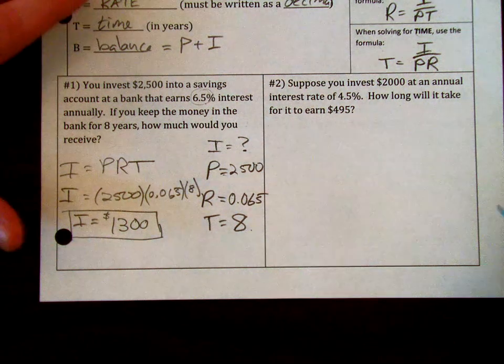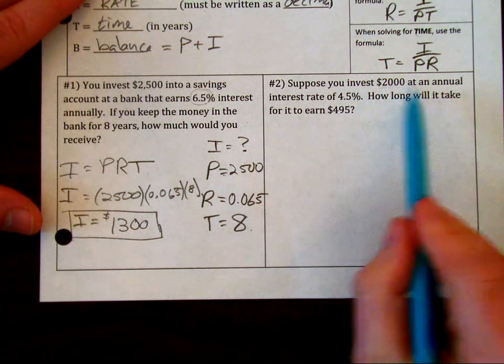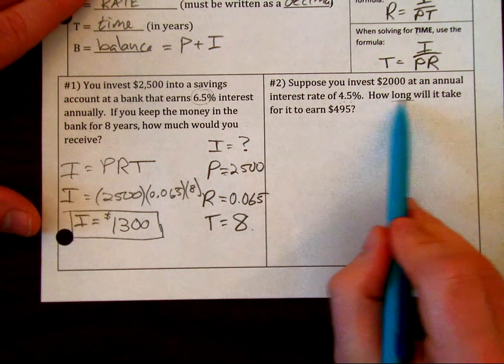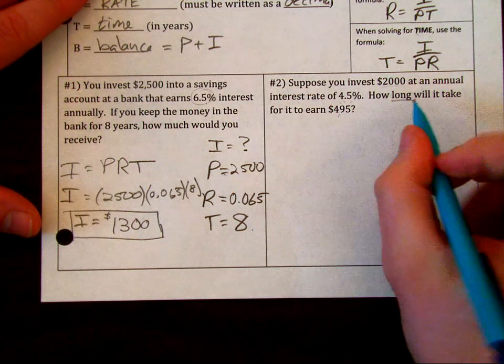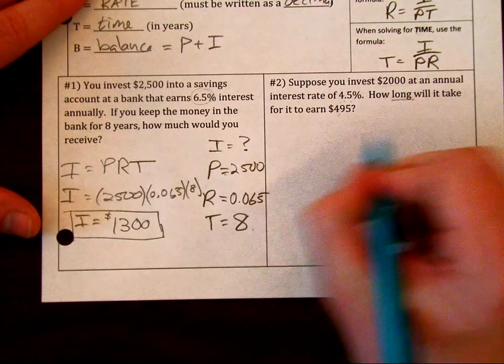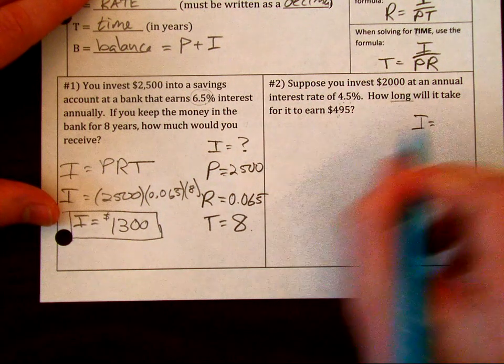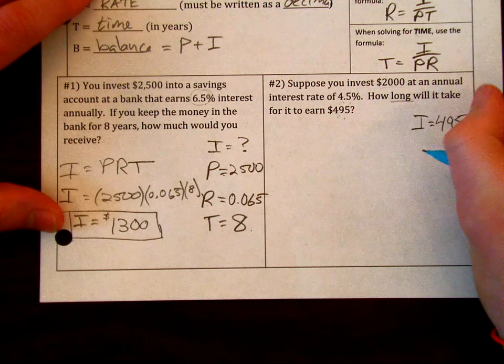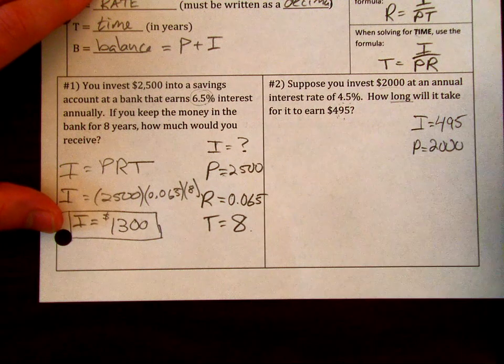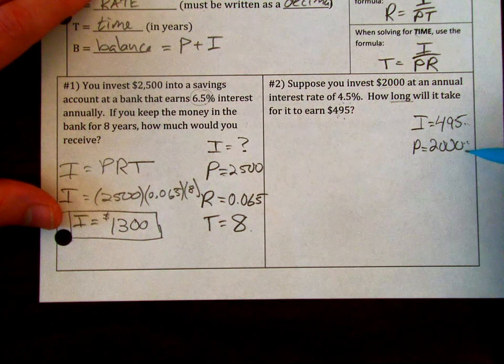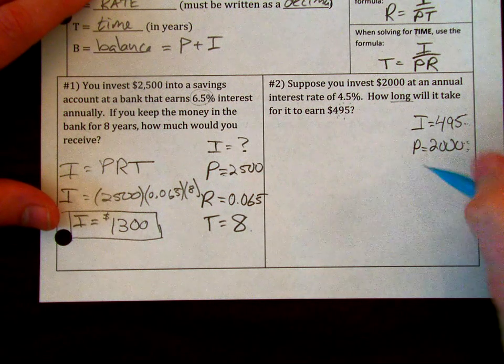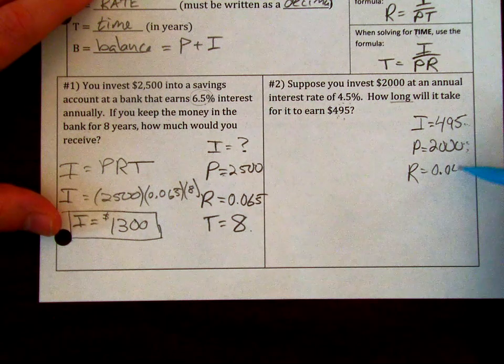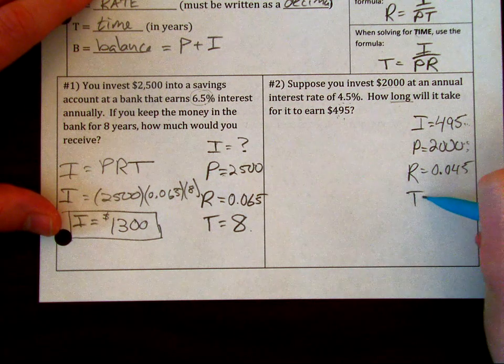Suppose you invest $2,000 at a rate of 4.5%. How long will it take to earn this amount? Now you're solving for T. Our interest is $495. Our principal is that starting amount, and usually between these two, the principal is going to be the larger dollar amount. Our rate is 0.045 as a decimal, and we're looking for T.